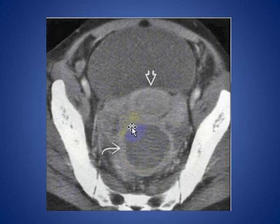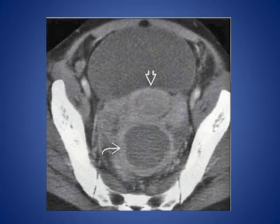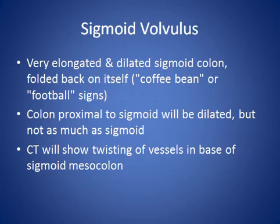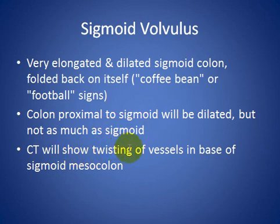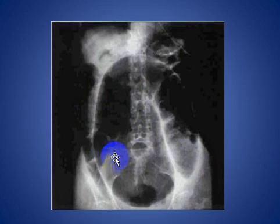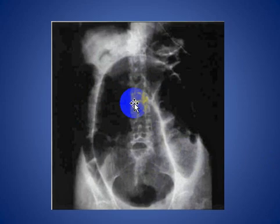Abdominal abscess is usually seen in post-operative patients and those with perforated appendix or diverticulitis. Here, a patient with a pelvic abscess with ring enhancement proved to be a tubo-ovarian abscess. Sigmoid volvulus shows a very elongated and dilated sigmoid colon folded back on itself, giving the appearance of a coffee bean sign, football sign, or inverted U sign. The colon proximal to the sigmoid will be dilated. CT shows twisting of the vessels at the base of the sigmoid mesocolon. Plain abdominal X-ray here shows dilated sigmoid colon with volvulus giving the inverted U shape.